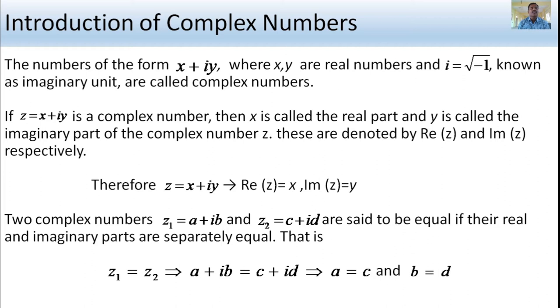If z equals x plus iy, then x is the real part and y is the imaginary part of the complex number z.